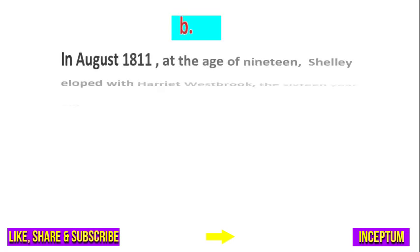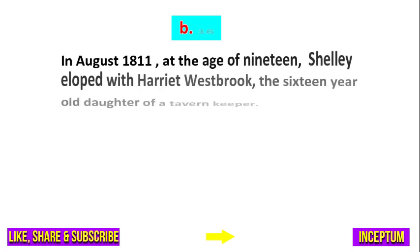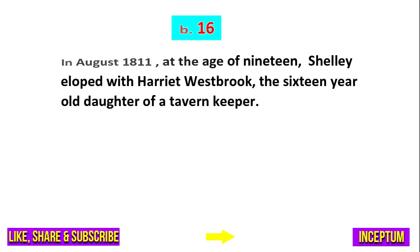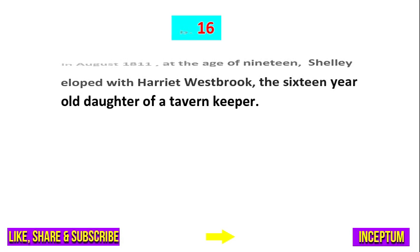And the right answer of this question is option B — 16. In August 1811, at the age of 19, Shelley eloped with Harriet Westbrook, the 16-year-old daughter of a tavern keeper.